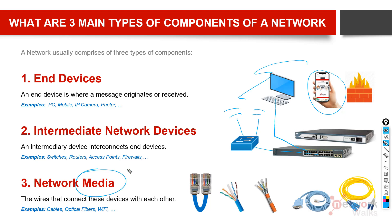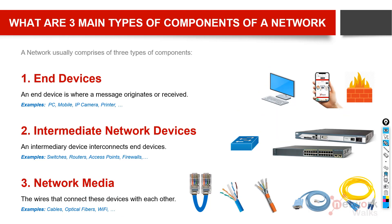The third type is the media. Media means cables or wireless signals — the wires that connect the devices with each other. Without wires, of course, how will we connect? So these are cables, optical fibers, Wi-Fi signals, microwave signals, Bluetooth signals — these kinds of media.